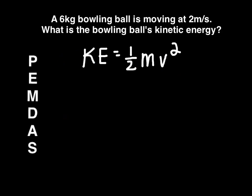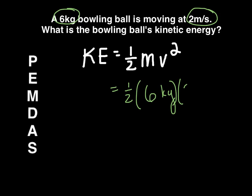Let's do an example. A six-kilogram bowling ball is moving at two meters per second. What is its kinetic energy? Six kilograms is the mass and two meters per second is the velocity, so we plug in one-half times six kilograms times two meters per second squared. Don't forget that squared.